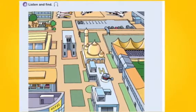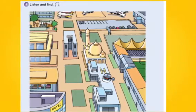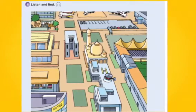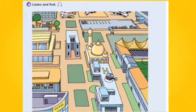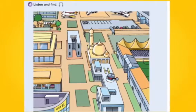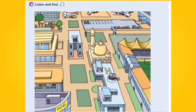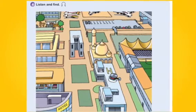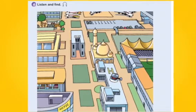Excuse me, where's the shopping mall? You are here at the airport. Go out of the airport and turn right at the traffic lights. Turn left and drive two blocks. There's a mosque on the left. Turn right after the mosque and drive one block. The shopping mall is on the left behind the hotel. Thank you.